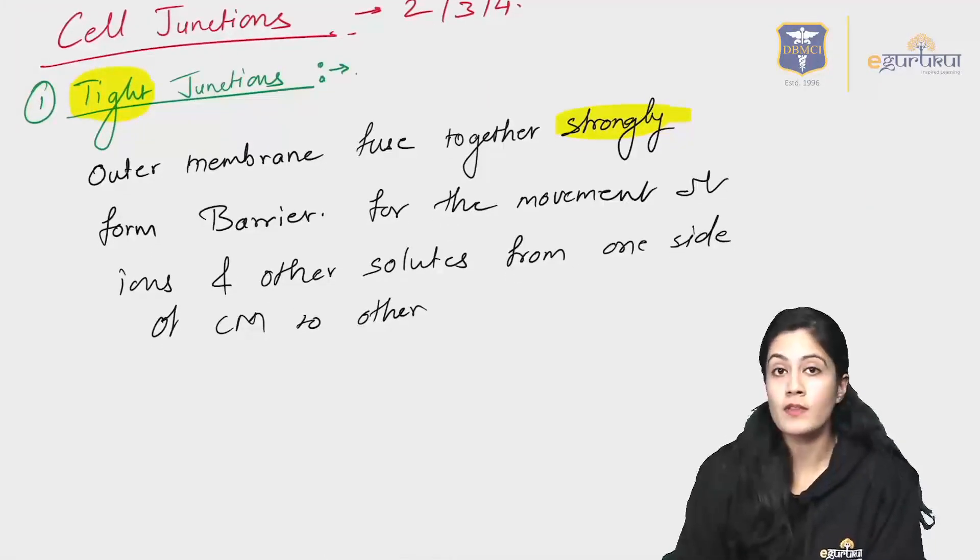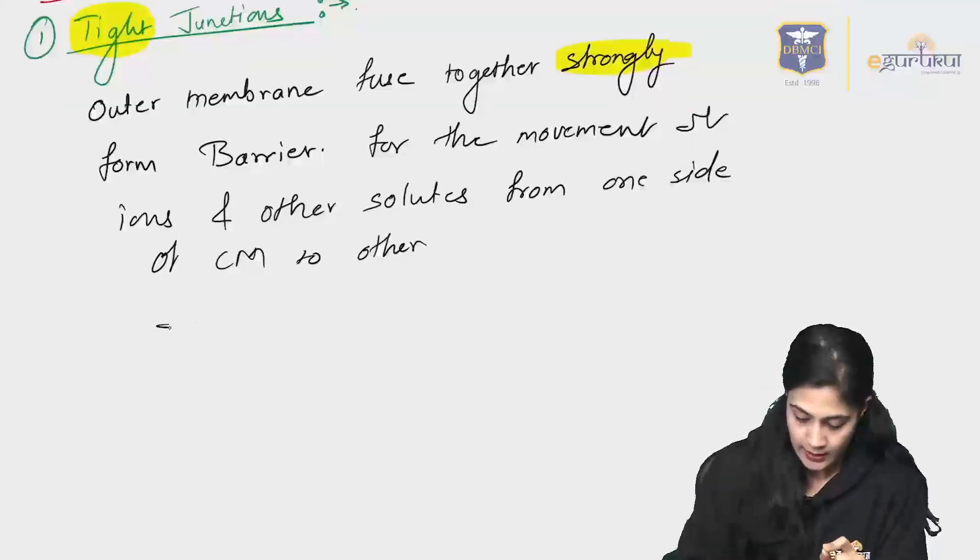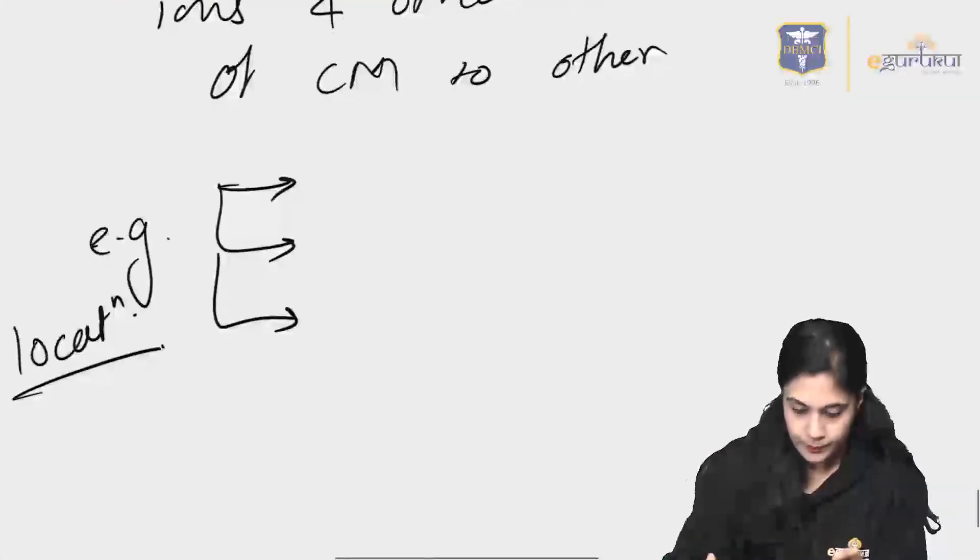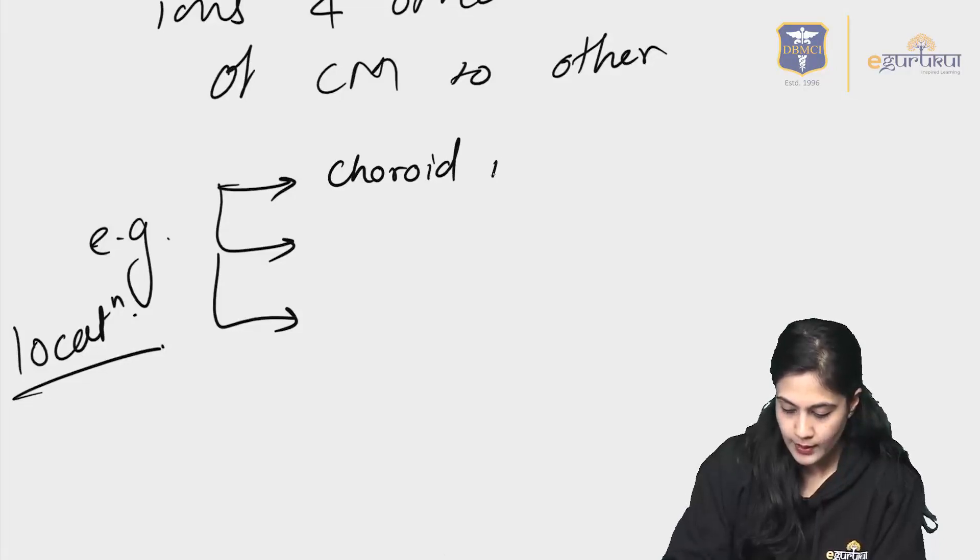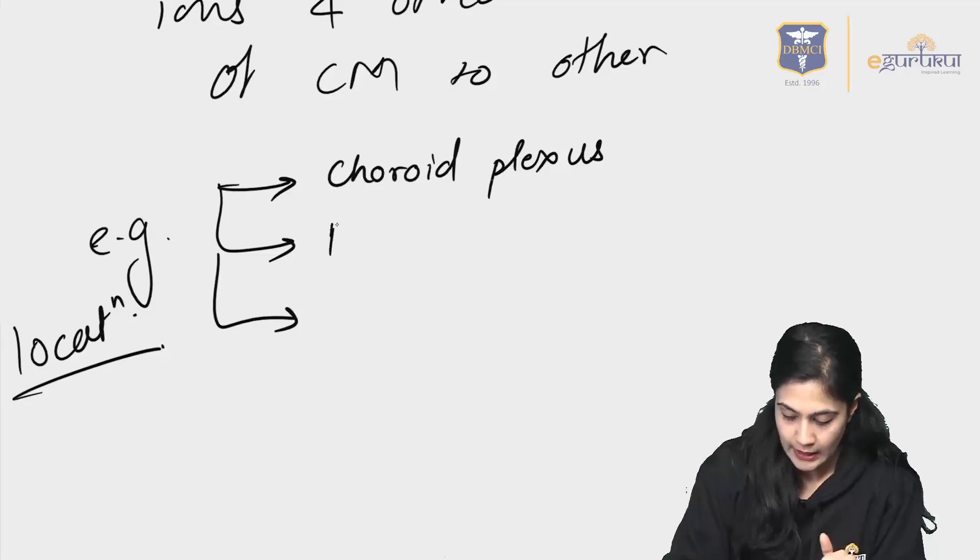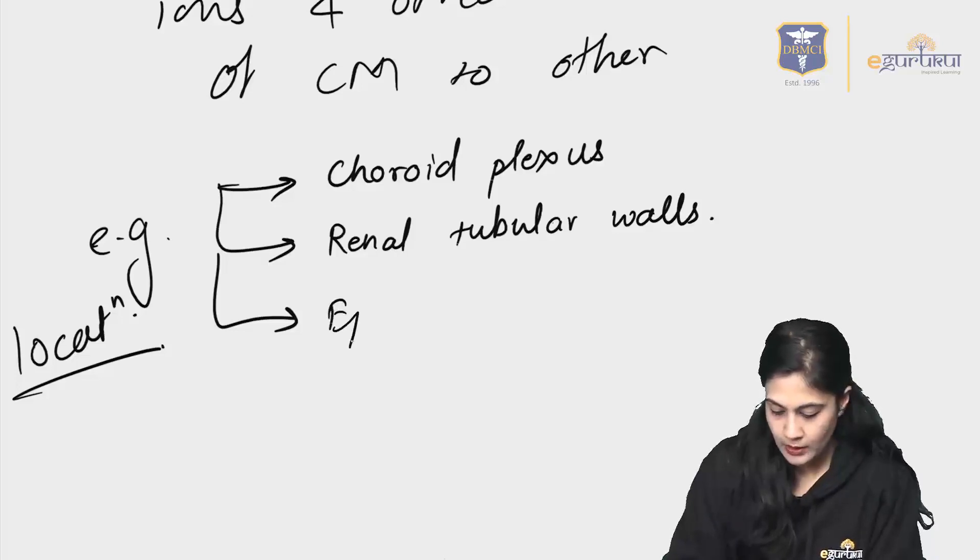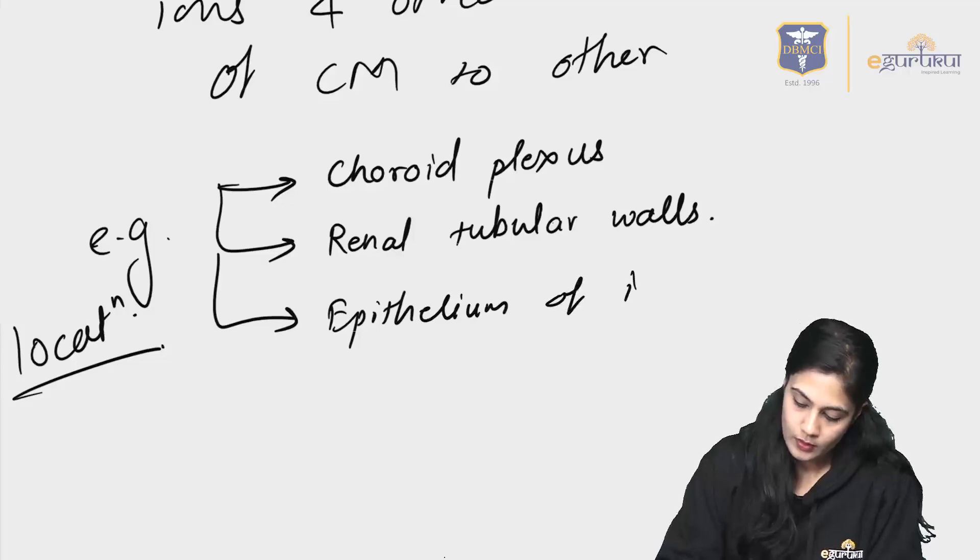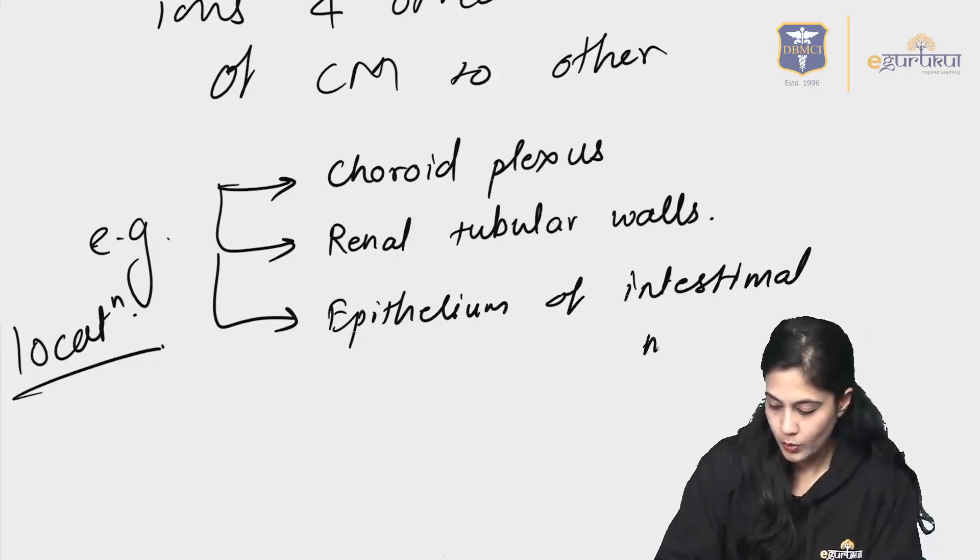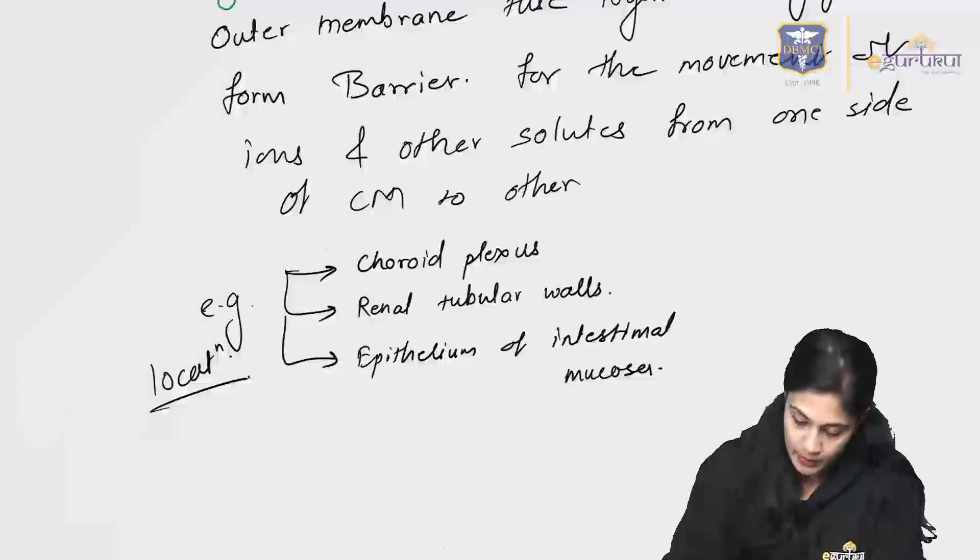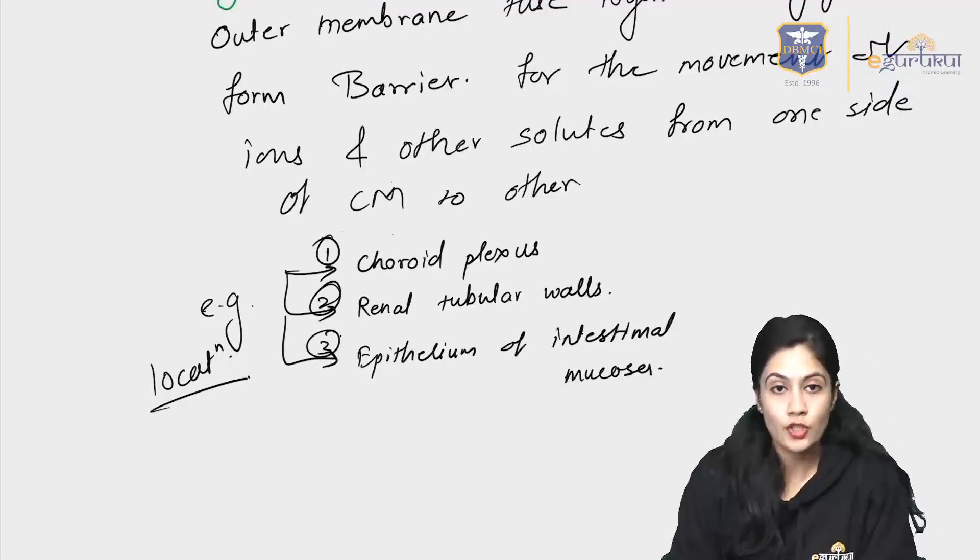Remember if you allow everything inside that is harmful for your body, so you need some type of barrier in which the tight junction will help you. And barrier for the movement of ions and other solutes from one side of cell membrane to other. Remember the tight junction have specific areas. In specific areas, only three areas they are present. So you should be knowing all the three areas. For the example, they have specific locations where these tight junctions are present are first in the brain, that is choroid plexus. In the kidney, renal tubular walls. And in the GIT, that is your epithelium of intestinal mucosa. So you should be knowing all three examples because only in these three areas, the tight junctions are present.